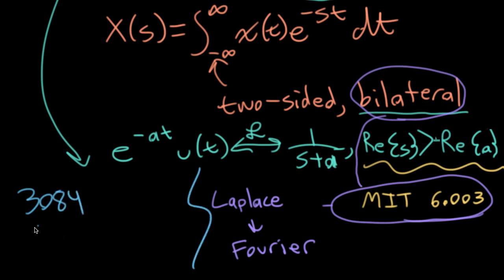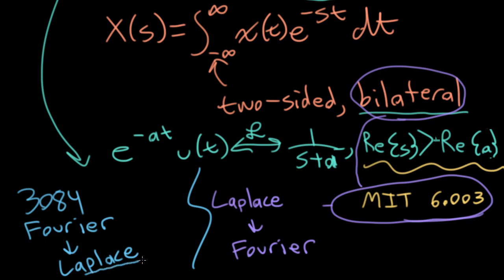One of the reasons MIT 6.003 talks about the bilateral Laplace transform is that they handle the material in a particular order — they talk about Laplace transforms first, and then Fourier transforms. If you take that approach, you really do have to talk about bilateral transforms first, because Fourier inherently requires you to handle the whole real number line for your time axis. In ECE3084, my preference is to talk about Fourier transforms first, and then go to Laplace transforms. With this approach, you'll find that 3084 is actually going to get easier, because we're going to focus on a specific subset of systems — namely systems defined by linear differential equations with constant coefficients.